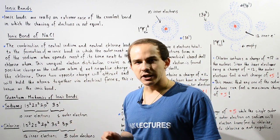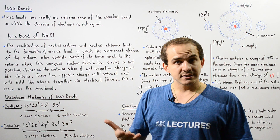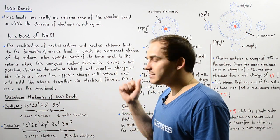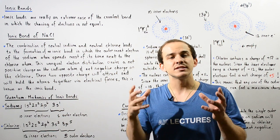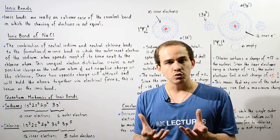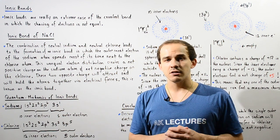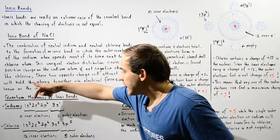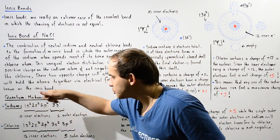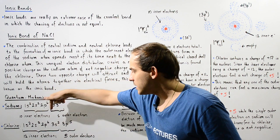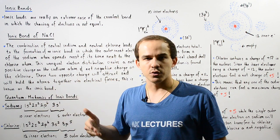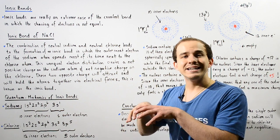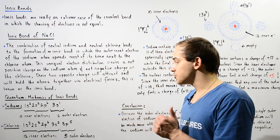What about chlorine? Neutral chlorine contains 17 protons in the nucleus and 17 electrons found outside that nucleus. 12 of these electrons are found in the innermost shell: 2 in the 1s, 2 in the 2s, 6 in the 2p, and 2 in the 3s. The remaining 5 electrons are found in the outermost electron shell.